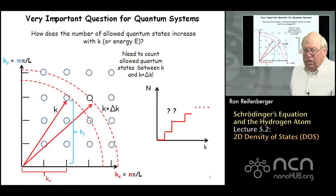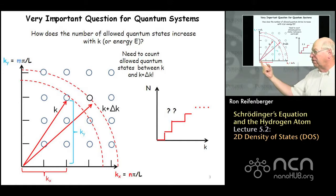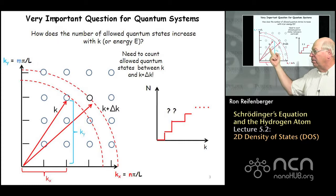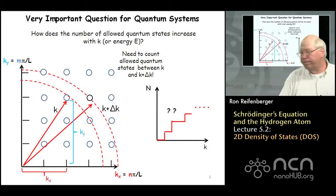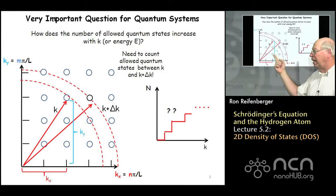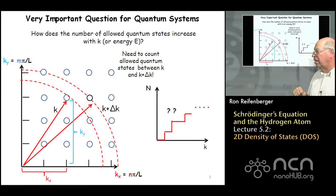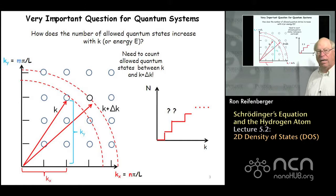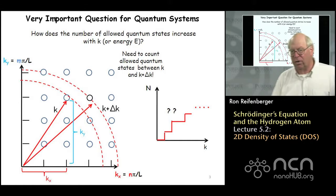The way we're going to do the calculation is we're going to rely on the plot of allowed energy states versus kx and versus ky — a plot that you saw in the last lecture. Remember that each dot on this plot represents an allowed state. What we're trying to do is devise a technique to count how many of these states there might be between some radius vector k and some other radius vector k plus delta k. So we're interested in estimating the number of quantum states that lie in this region of space.